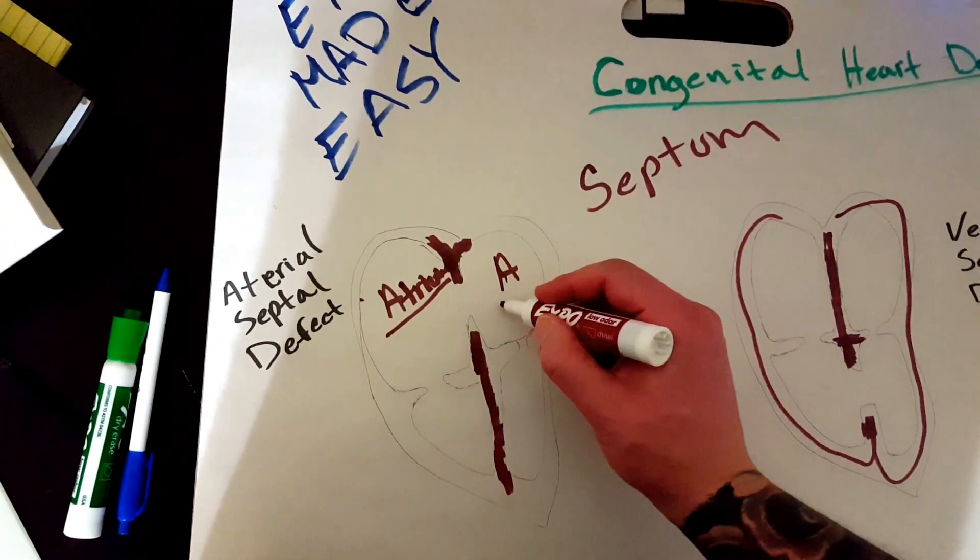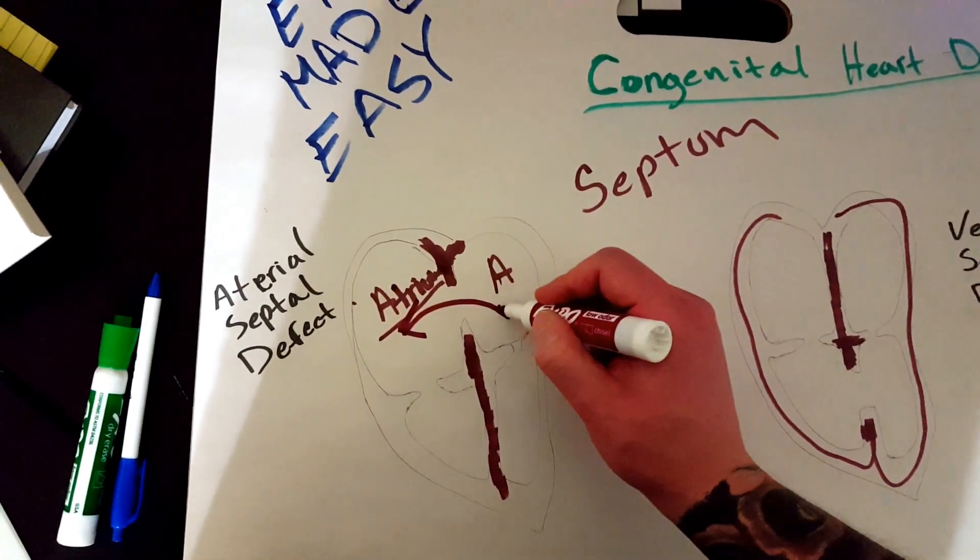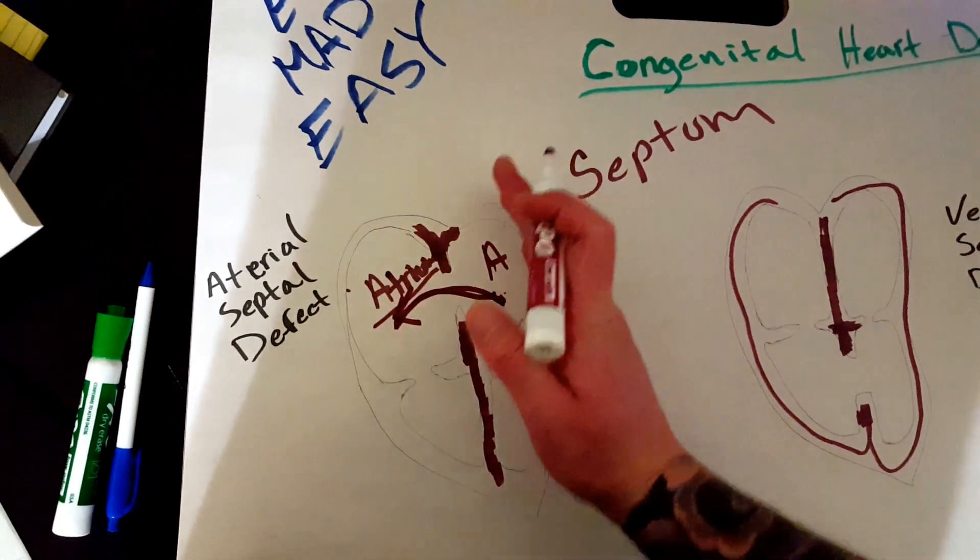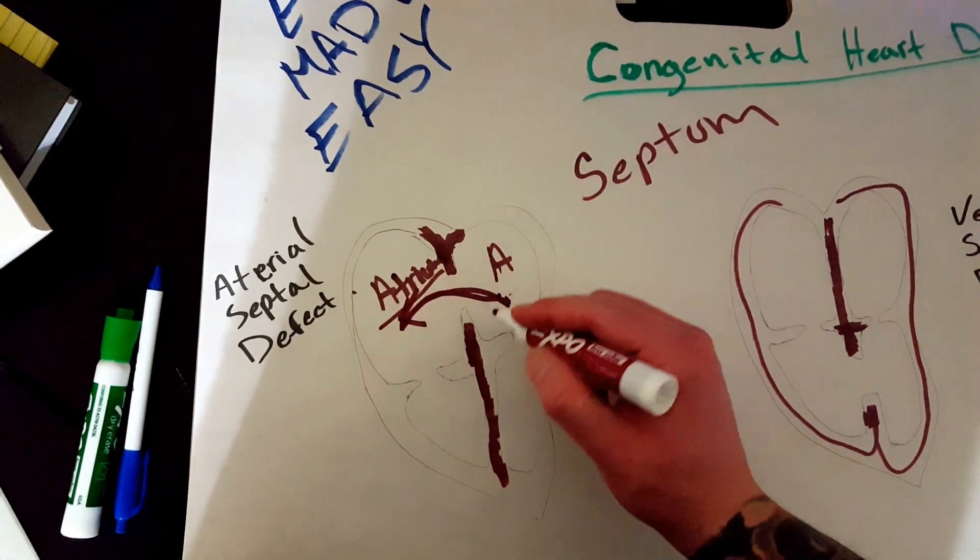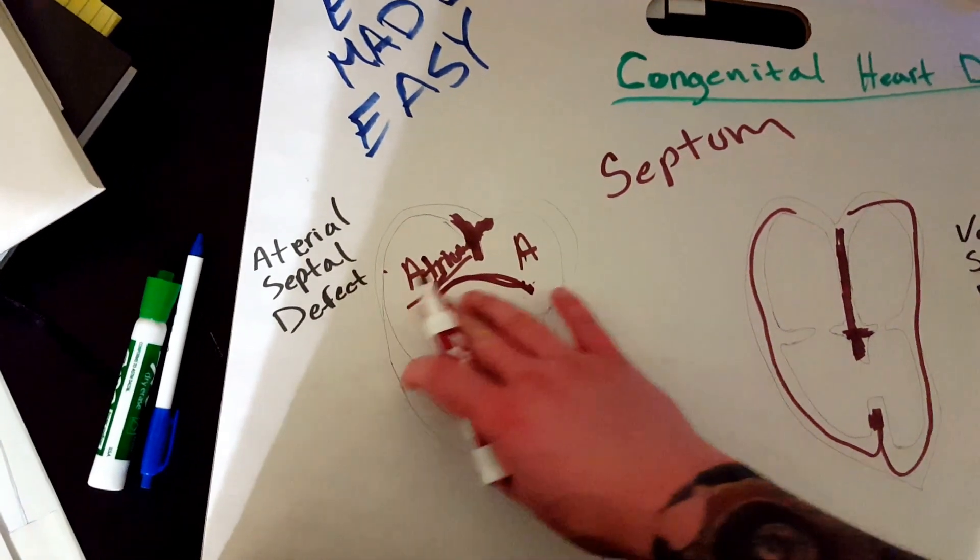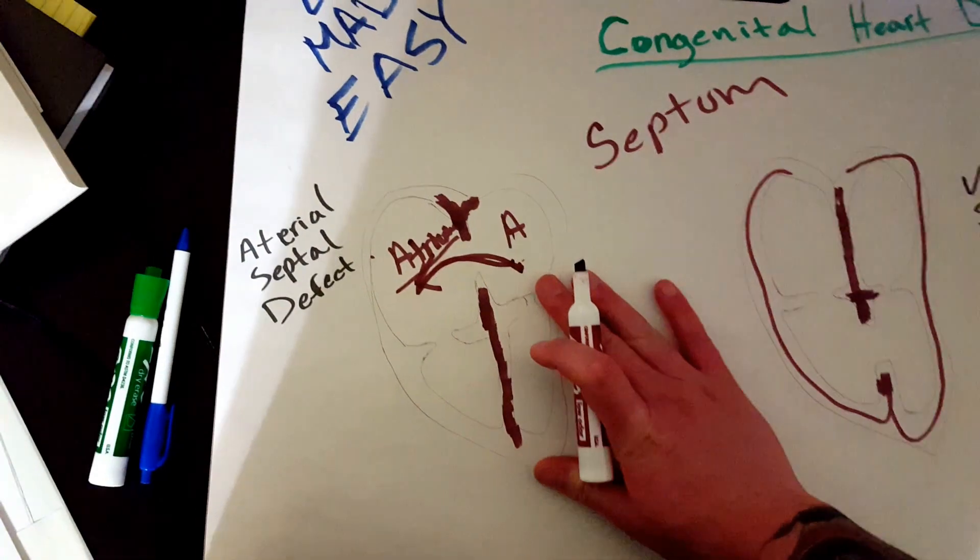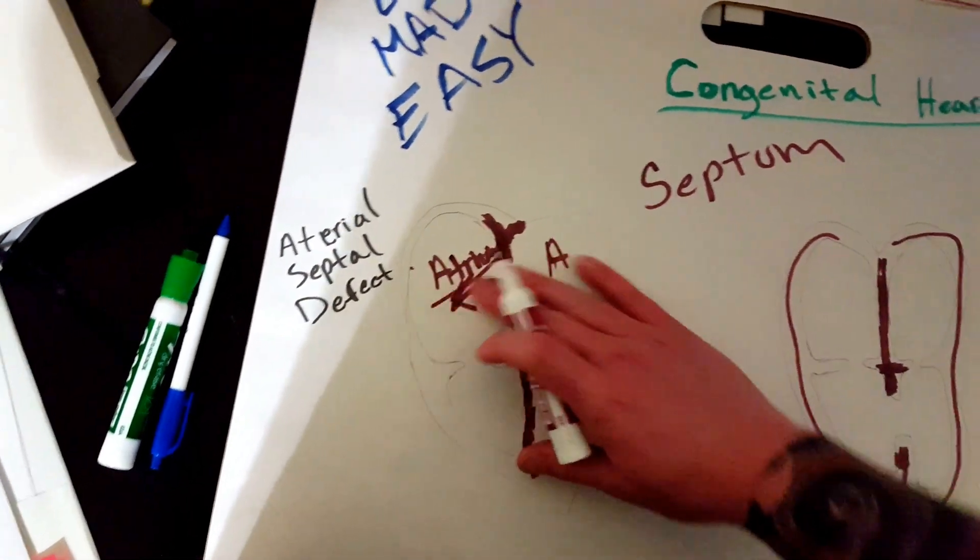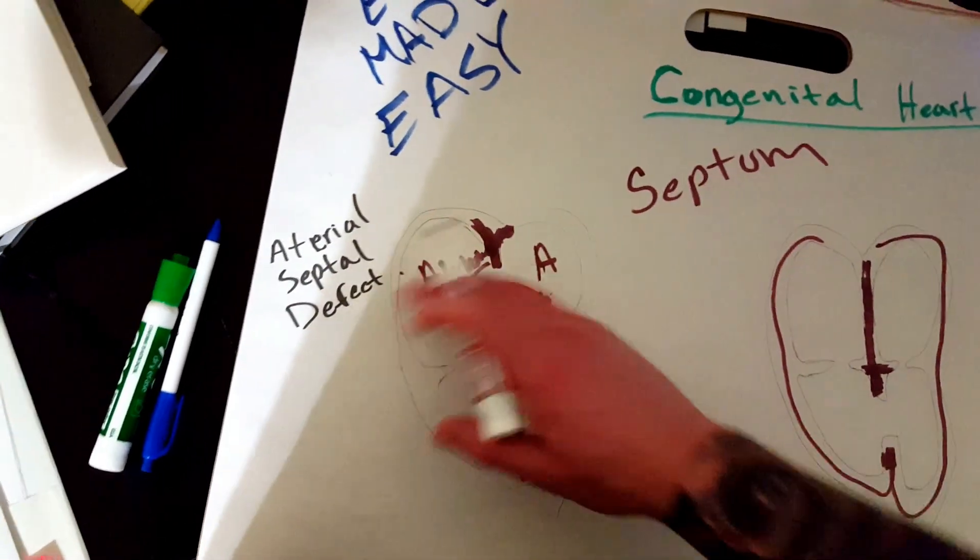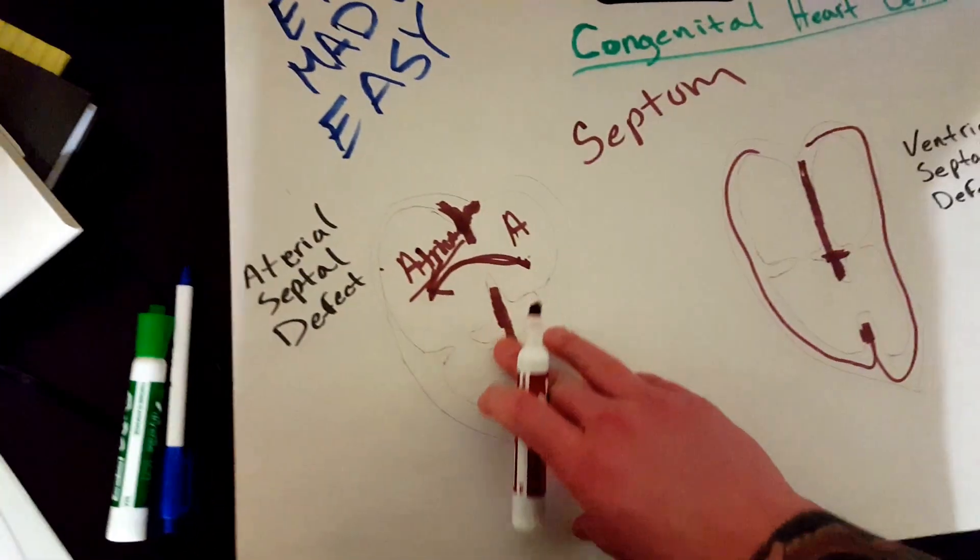And blood will most likely leak from here, from the left side to the right side. Usually, that's how it works. There's always more pressure on the left side. So, if your patient has an atrial septal defect, you have a hole between the two atriums and blood will be pouring from the left side to the right side.